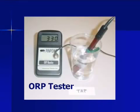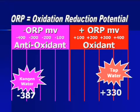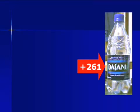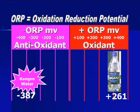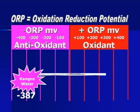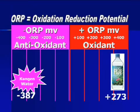When you measure tap water, the ORP is positive 330 — all the way to the right — which means tap water carries lots of oxidants into the body. The Sunny bottled water measures positive 261 ORP, also way up on the far right of the scale. There is Evian, way out on the positive right of the scale. Fiji is also on the right of the scale, meaning high in oxidants.